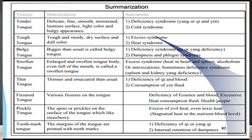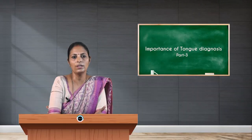A fissured tongue is an important finding indicating deficiency of essence or blood, excessive heat, and consumption of fluid, with associated health issues. Prickly projections on the tongue indicate excess heat or toxic heat. Tooth impressions on the tongue especially indicate deficiency of qi — sometimes yang or yin qi — and also indicate retention of dampness.